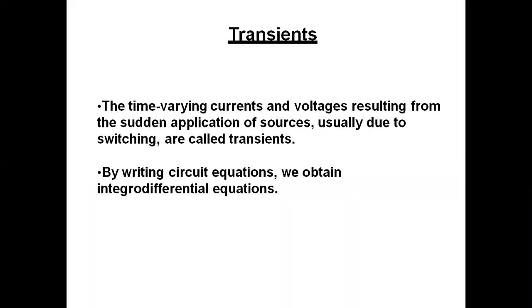Let us first start with the transient. The time-varying currents and voltages resulting from the sudden application of sources, usually due to switching, are called transients. Transient means the amount of response that occurs within a system which lasts for a few milliseconds, occurring due to switching cases. This phenomenon of transient, which is present in the system for a few milliseconds, is known as transient.